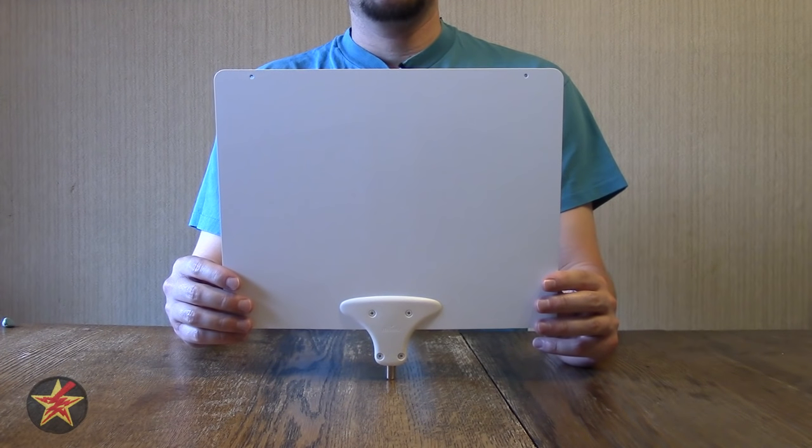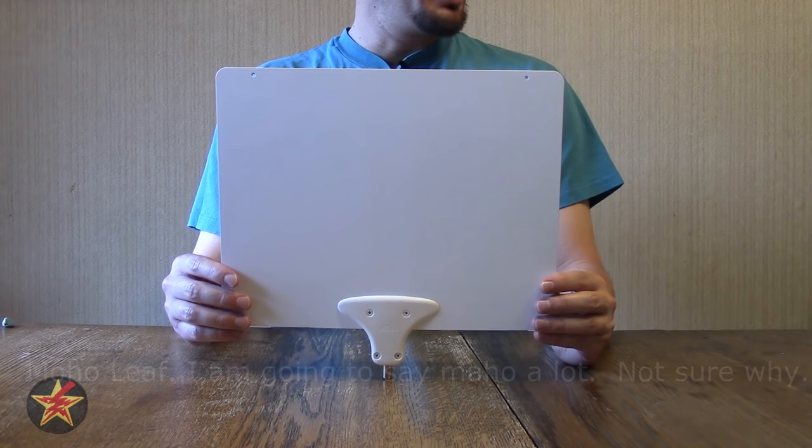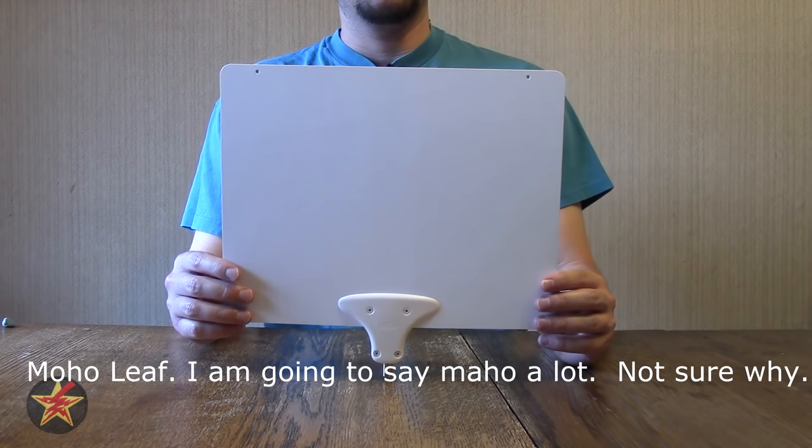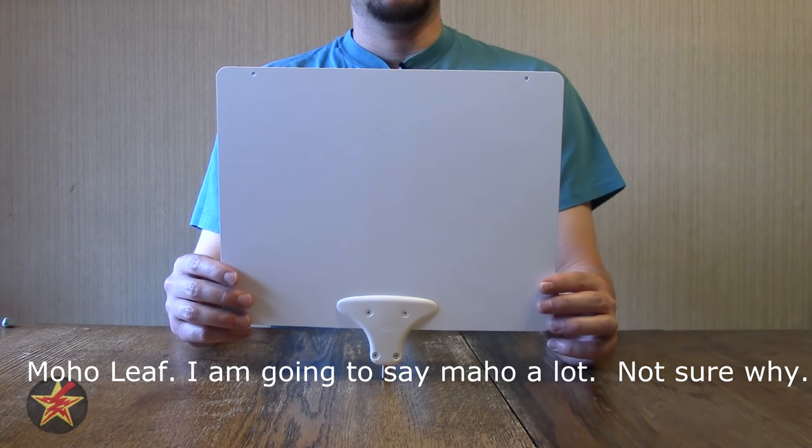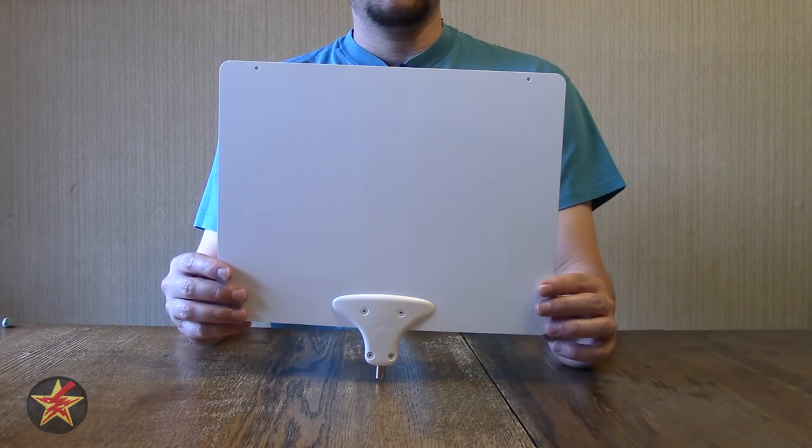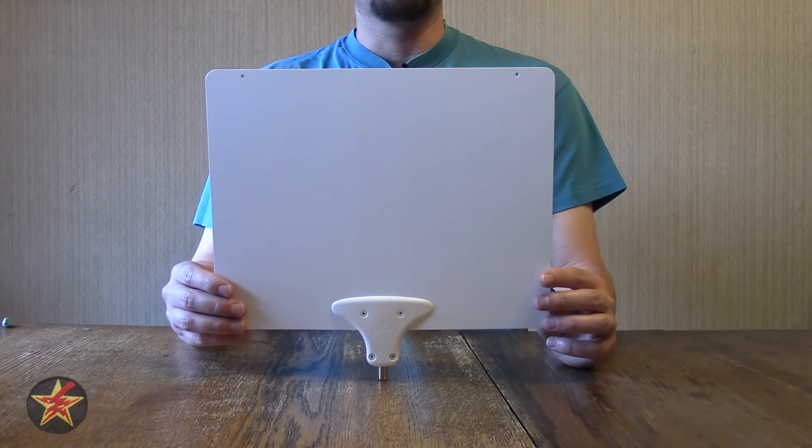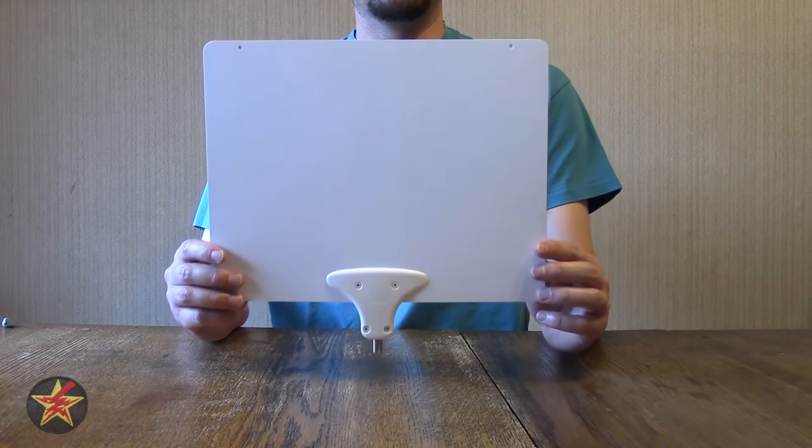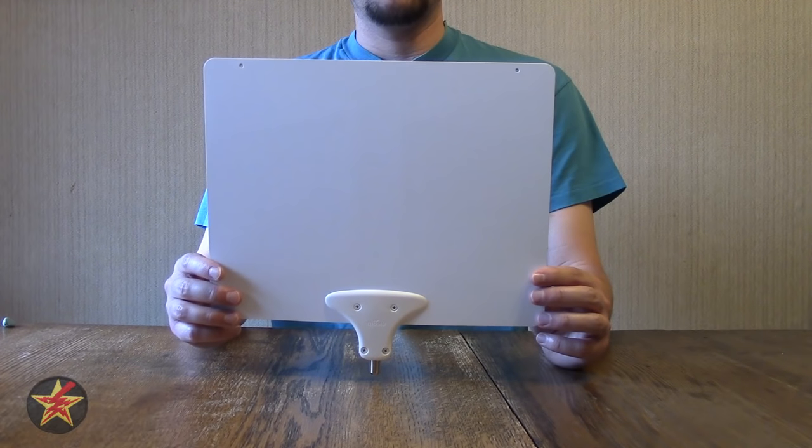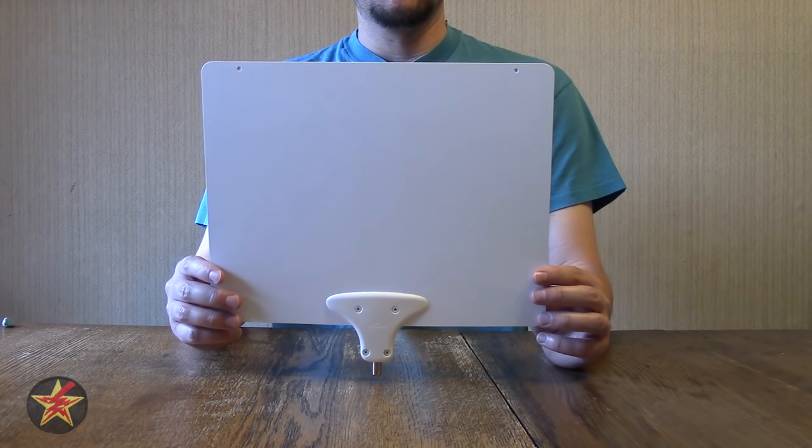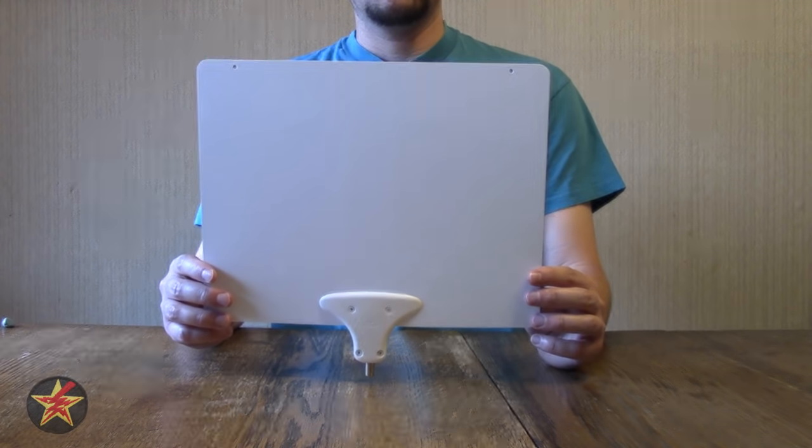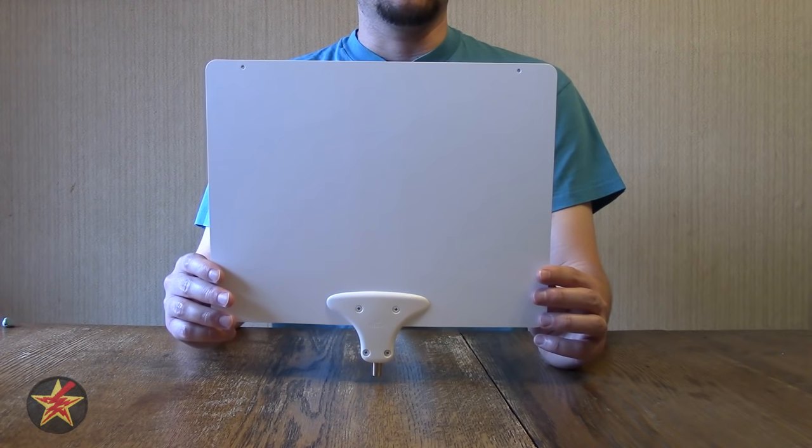Hello I am Wander001 and this is my review of the Mohu Leaf 50 Amplified Antenna. This is a digital TV antenna similar to how rabbit ears were back in the day. This will allow you to pull down digital TV signal into your TV without having to have a cable box or a cable subscription.